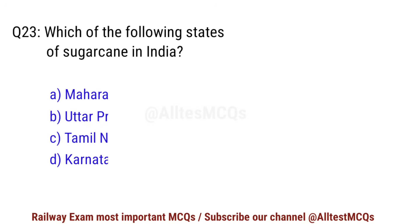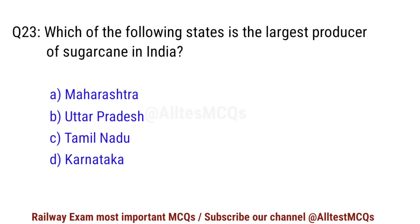Q23. Which of the following states is the largest producer of sugarcane in India? Right option is B. Uttar Pradesh.